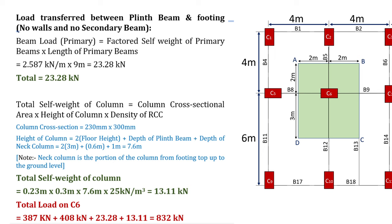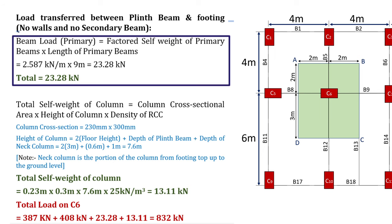The load transferred between the plinth beam and footing includes only the load due to primary beams: factored self weight of primary beams (2.587 kN/m) × length of primary beams (9 m) = 23.28 kN.